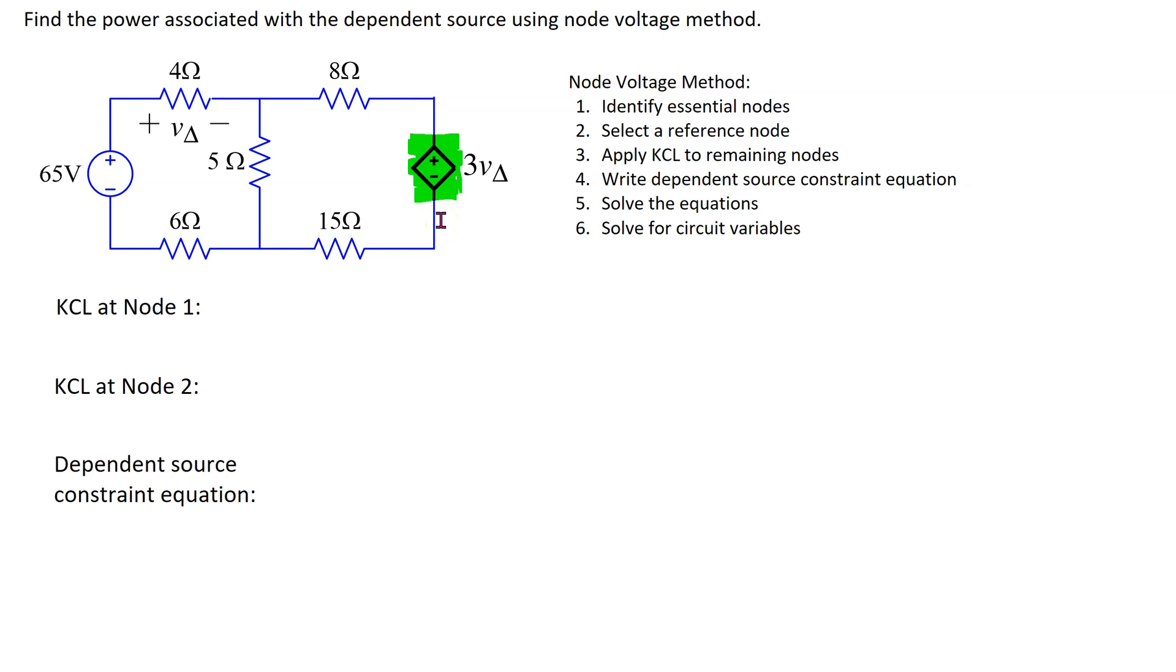We can see that we have a plus minus inside the symbol, so that means this is a dependent voltage source and the magnitude is in terms of another circuit voltage. So that means this component is a voltage controlled voltage source. Let's look at how we can use node voltage method to solve this circuit.